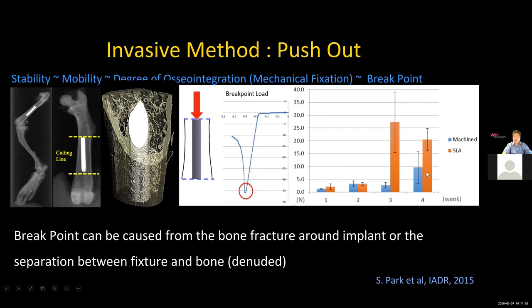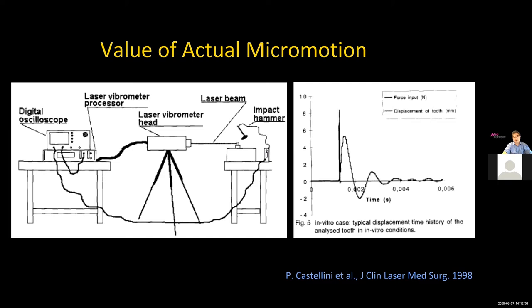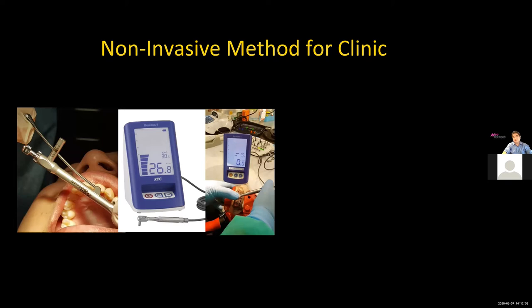The value of actual micromotion (VAM) diagram: a hammer strikes the implant, a laser beam next to the implant records how it moves. This is considered one of the most accurate ways to measure actual implant movement; however, it cannot be used intraorally — only in vitro. So let's move to non-invasive clinical methods.